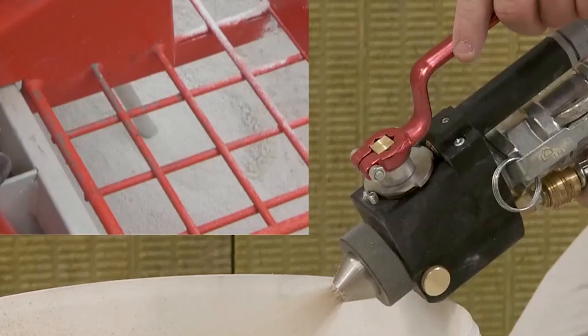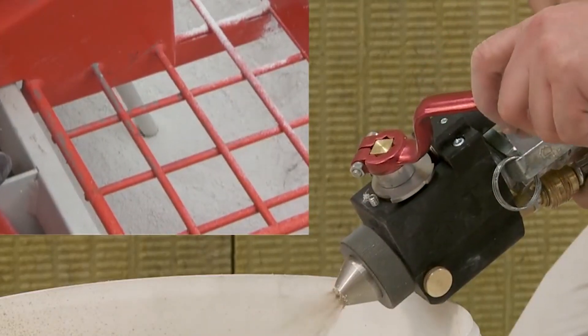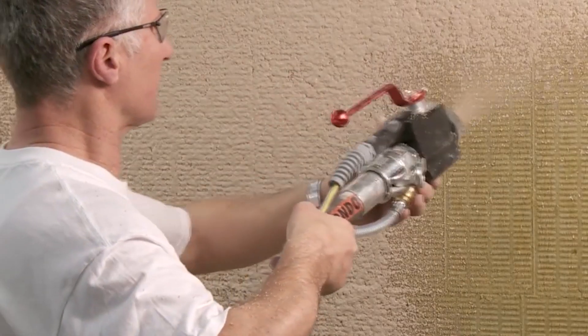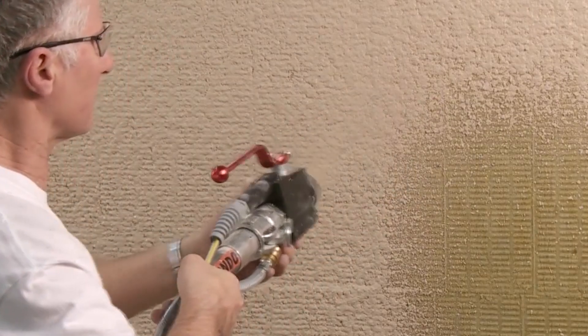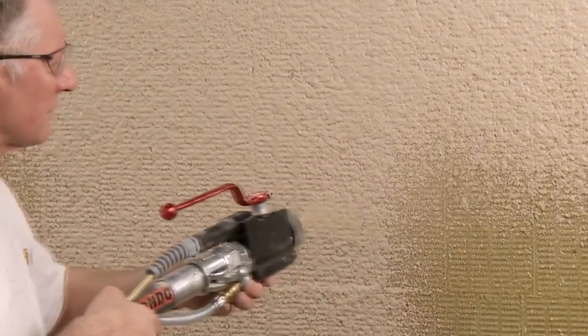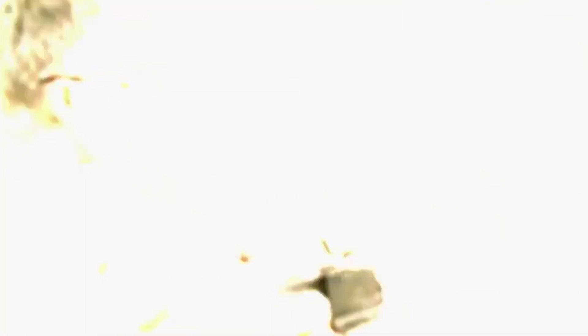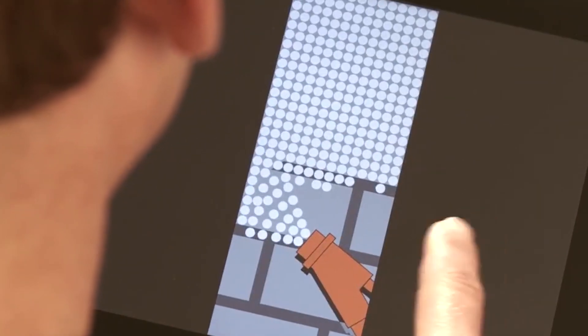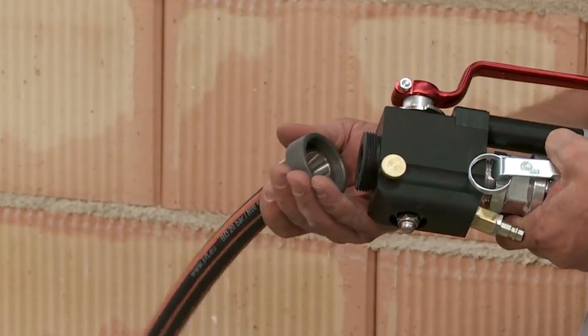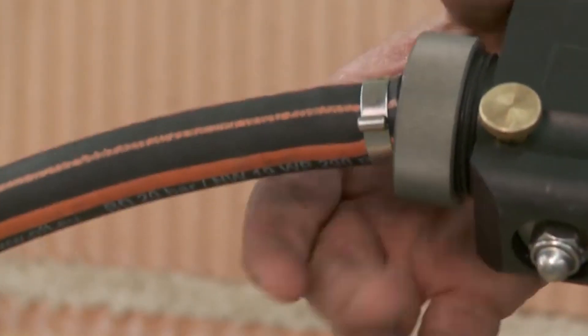The PFT Jet Set Pro is designed for high performance and efficiency, allowing for rapid application of plaster and mortar with minimal downtime. The machine features a modular design that allows for easy maintenance and repair, as well as a user-friendly interface that simplifies operation.